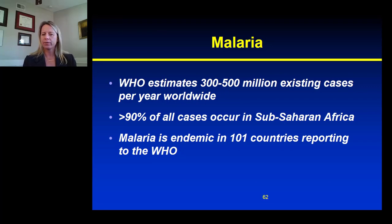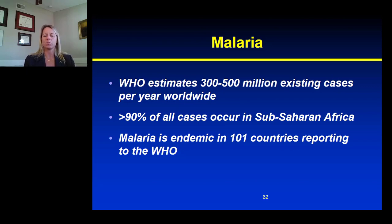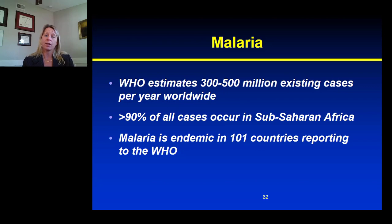I want to talk briefly about malaria because this is a disease that, depending on the region, can either be considered an epidemic or an endemic disease. Worldwide, malaria is fairly common — it occurs in between 300 and 500 million persons per year, but the majority of those cases are presenting in sub-Saharan Africa where malaria is essentially considered an endemic disease.